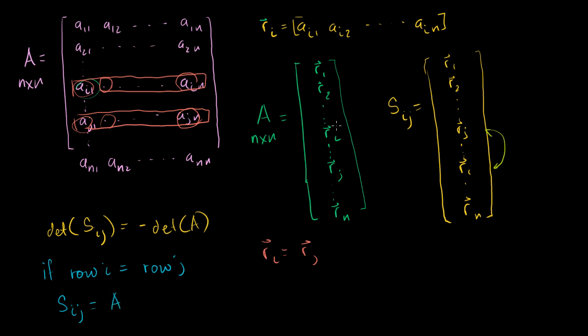So that implies the determinant of the swapped matrix is equal to the determinant of A. But we just said the swapped matrix, when you swap two rows, equals the negative of the determinant of A. So this tells us it also has to equal the negative of the determinant of A.